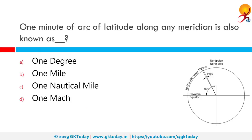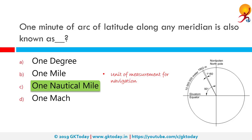One minute of arc of latitude along any meridian is also known as one nautical mile. A nautical mile is a unit of measurement used in air and marine navigation and for the definition of territorial waters. Historically it was defined as one minute — one sixtieth of a degree — of latitude. Today it is defined as 1852 meters. The derived unit of speed is the knot, or nautical mile per hour.